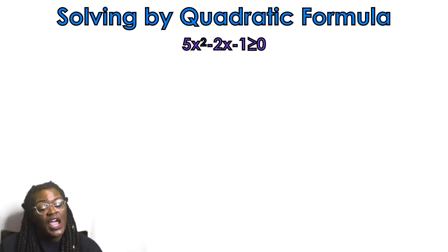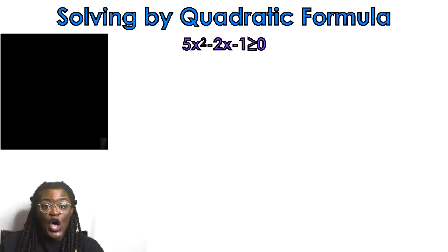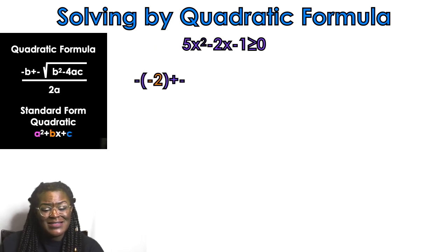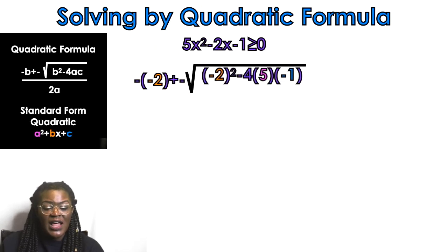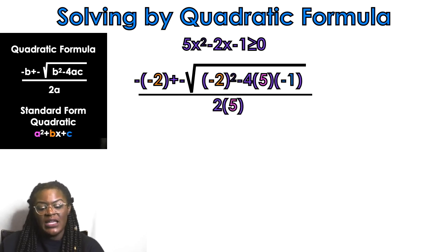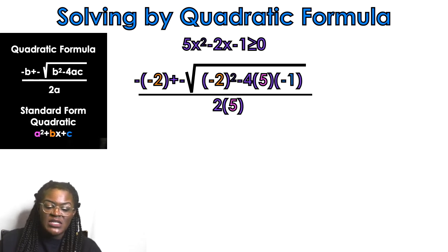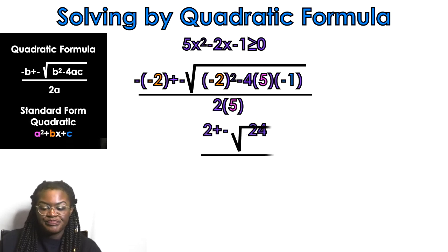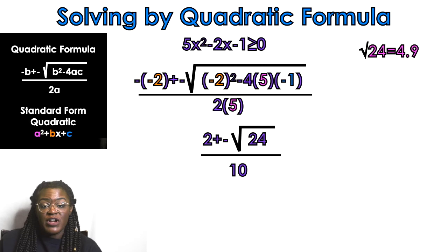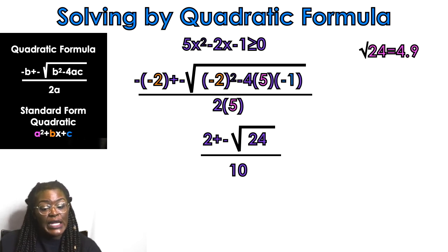One more example — pause and try it on your own first. This example is already set equal to 0, which is great. All I have to do is plug it into the quadratic formula: negative negative 2 plus or minus the square root of negative 2 squared minus 4 times a times c, all over 2 times a — where a is 5 and c is negative 1. PEMDAS gives us the square root of 24 under the radical, which is approximately 4.9.